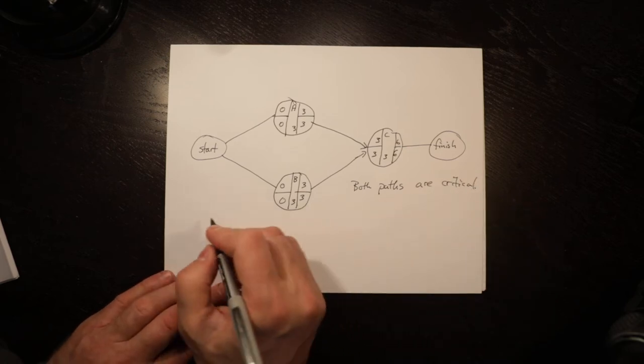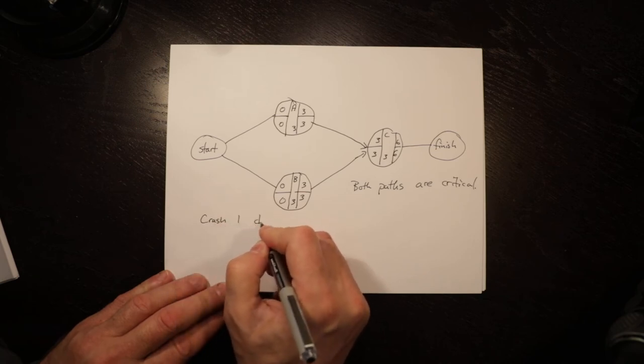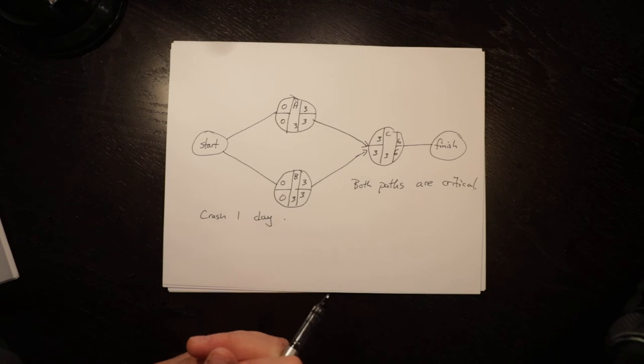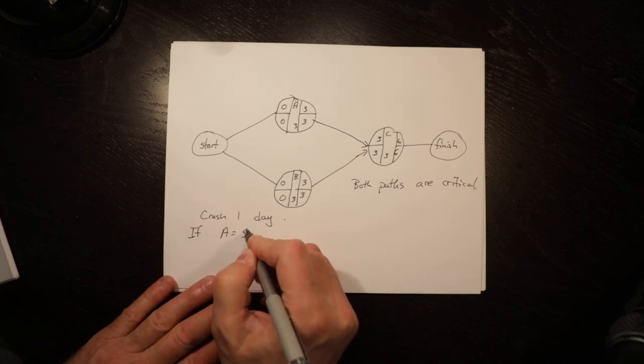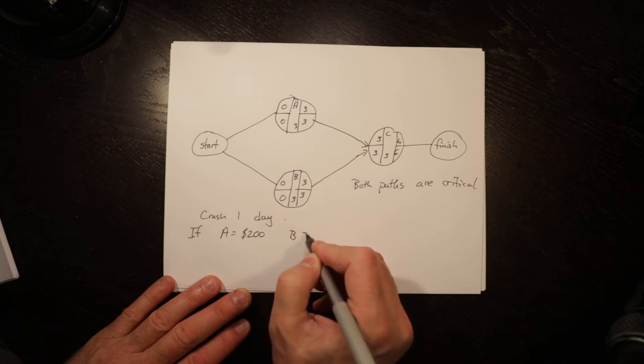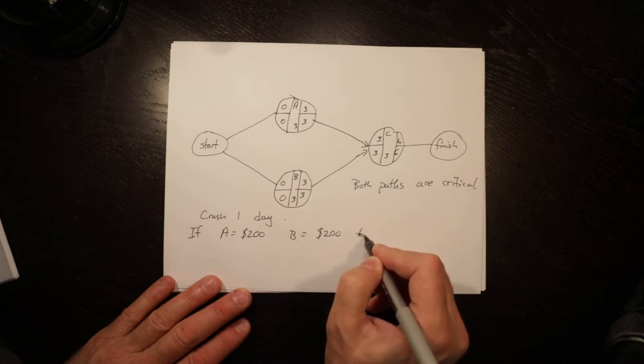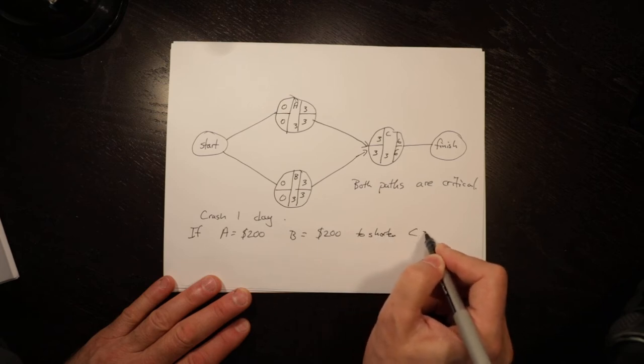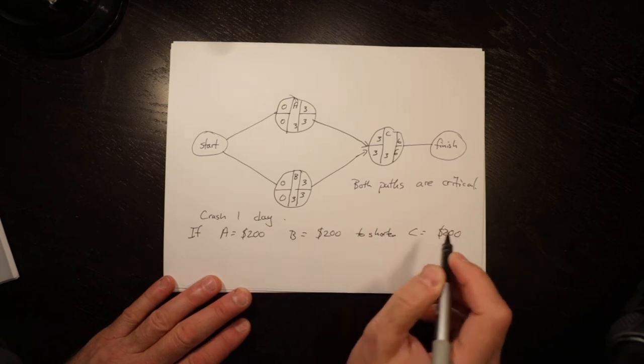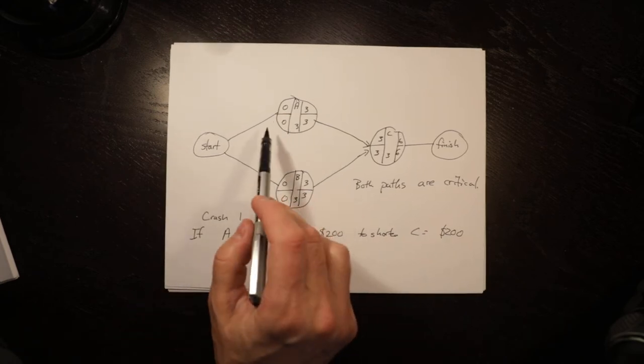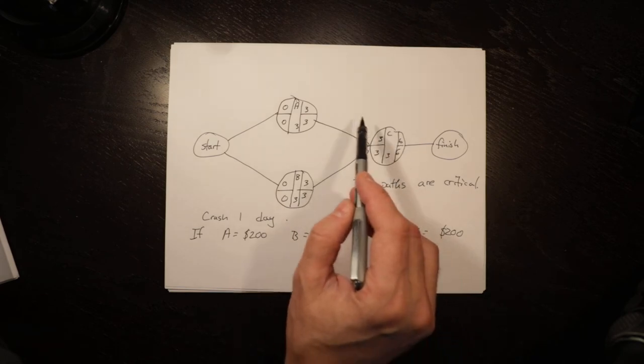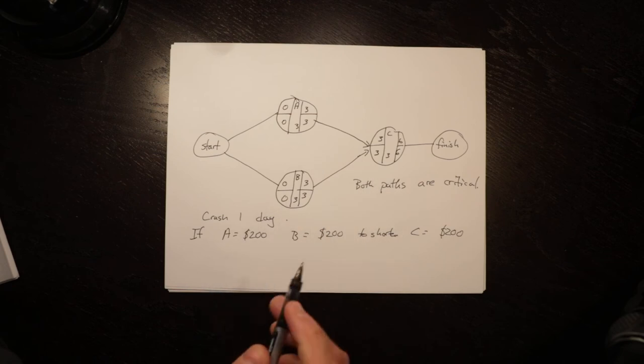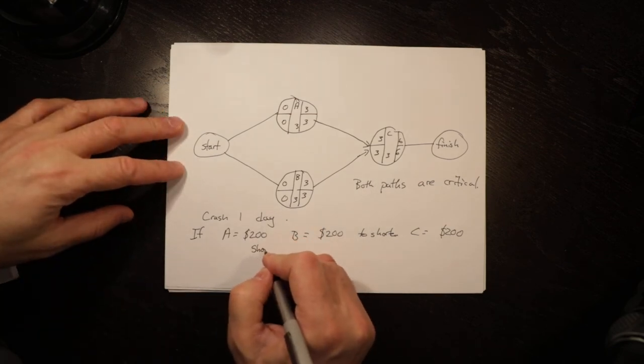If we want to crash one day, the next information you need to know is how much. Let's look first at if A is $200 to shorten, B is $200 to shorten, and C is $200. In that circumstance you would have the critical path A, C and the critical path B, C. You could shorten C and you would shorten both critical paths. So the cheapest way is to shorten C for $200.